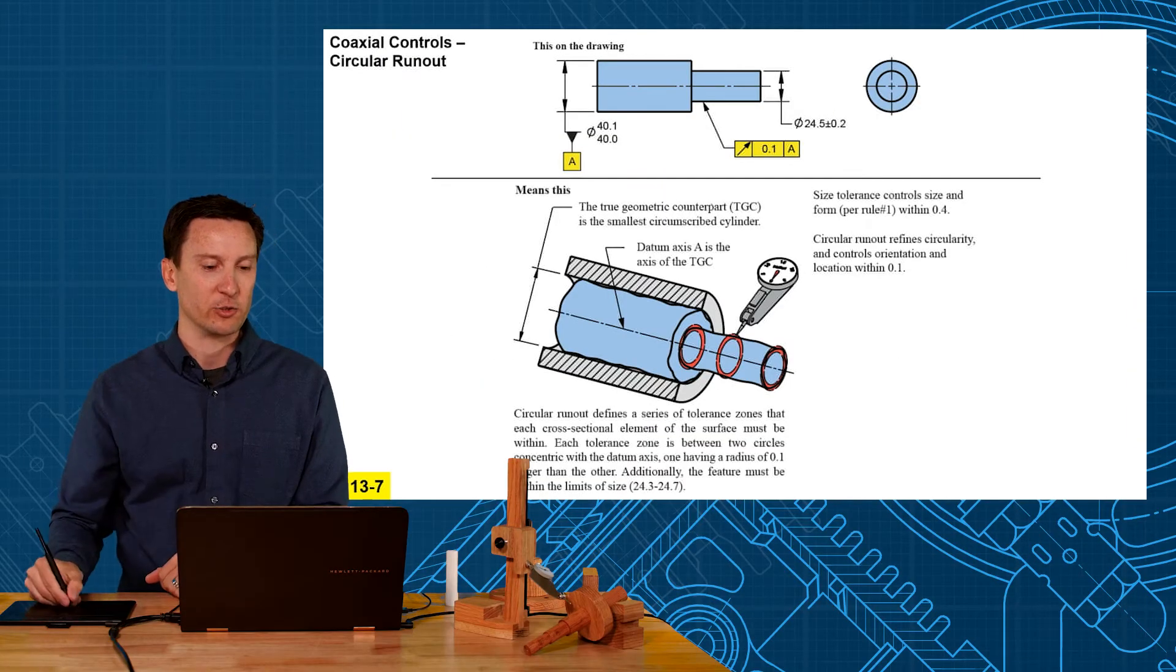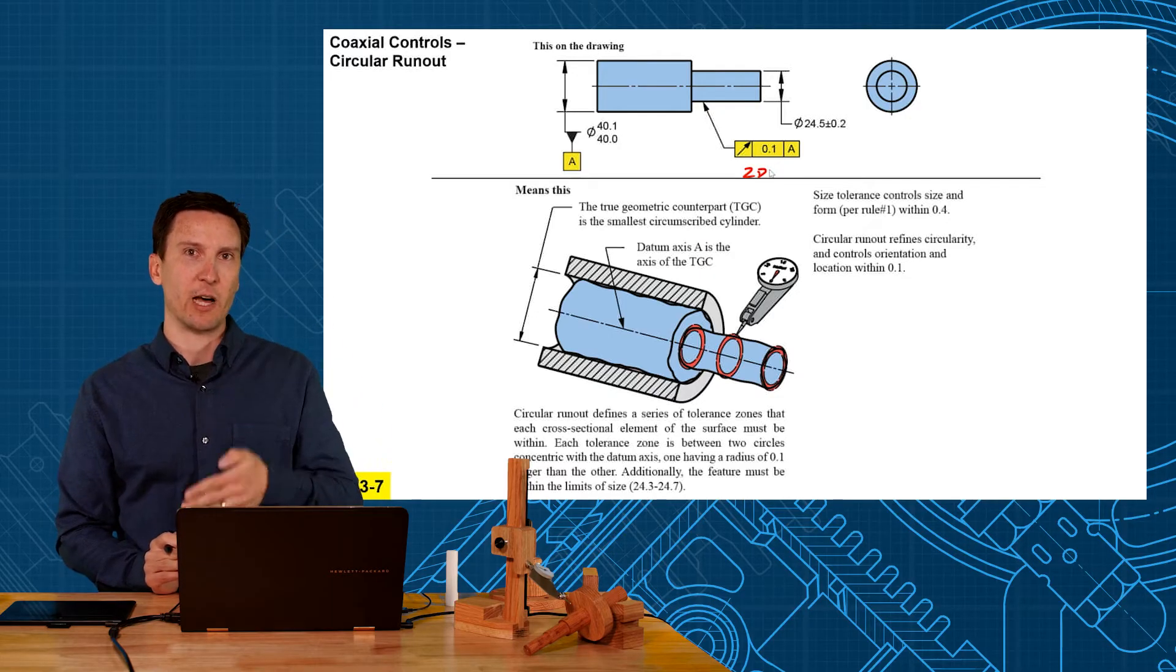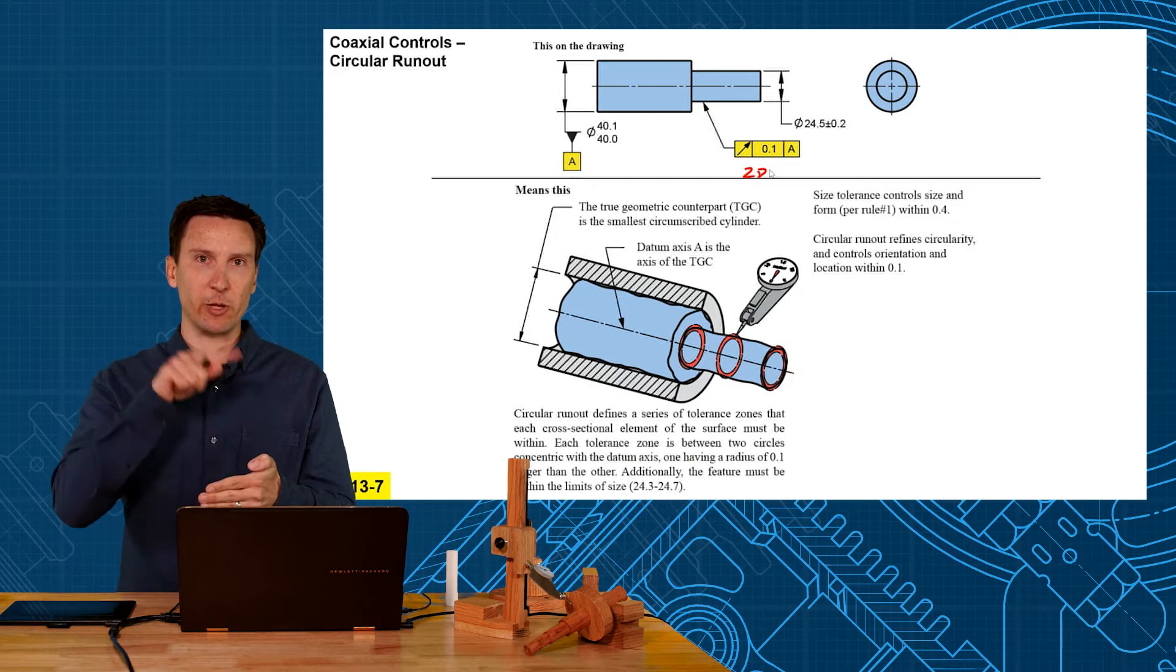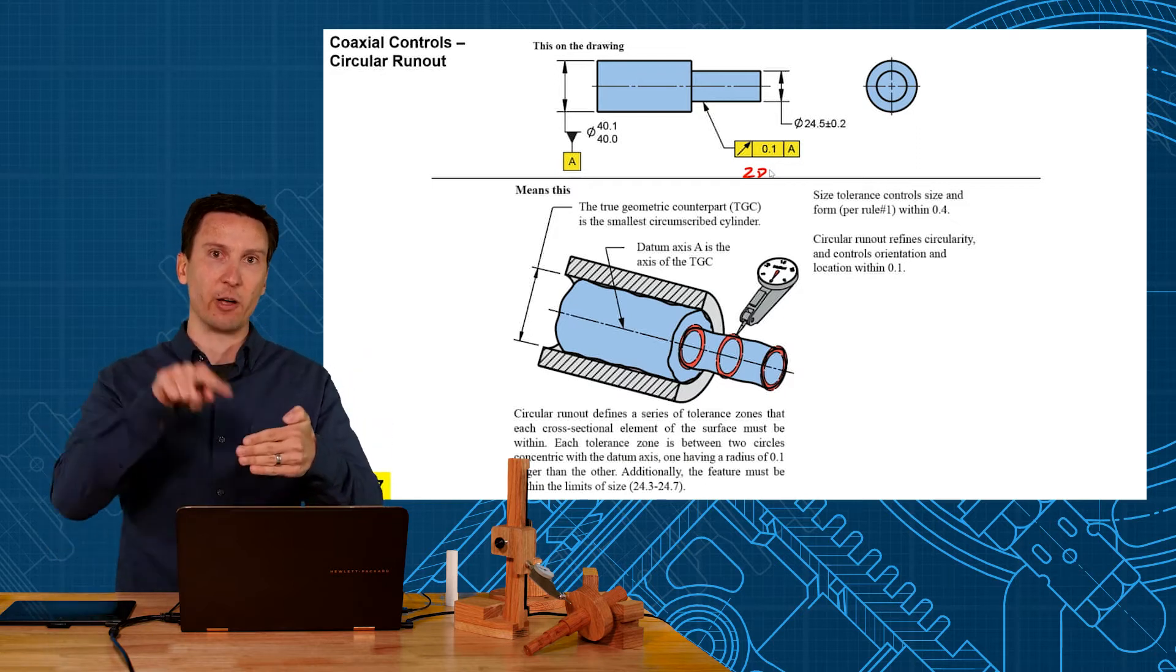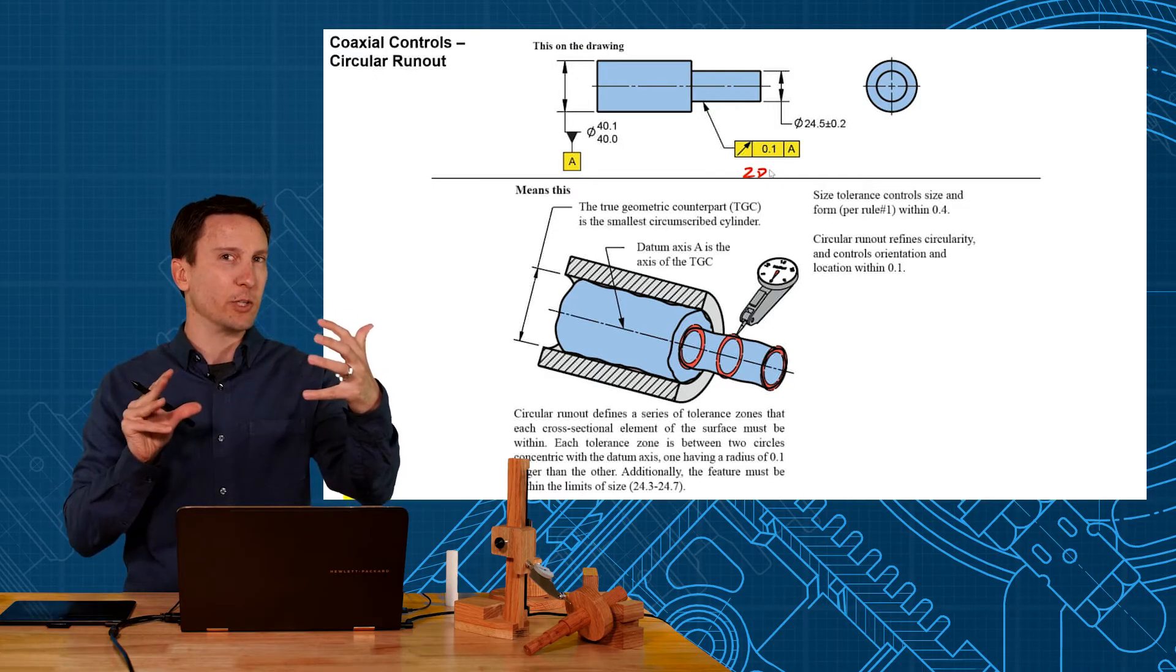Now circular runout is just your two dimensional version. In any 2D specification we're talking about cross sections one at a time. Take a cross section evaluate the runout. Take another cross section evaluate the runout. Take another cross section evaluate the runout. But you don't compare them to each other.